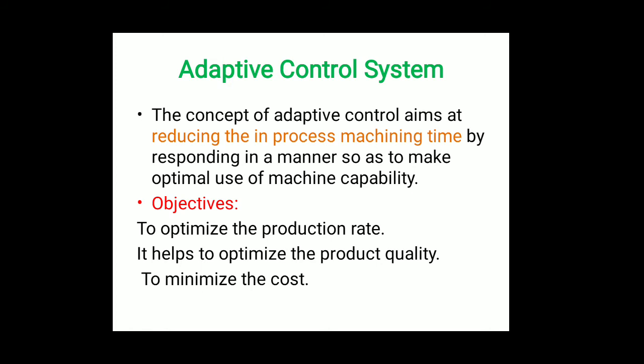Next is the adaptive control system. The concept of adaptive control aims to reduce in-process machining time by responding in a manner so as to make optimal use of the machine capability. Adaptive control aims at real-time control of operating parameters such as cutting speed, feeds, and depth of cut, which adjust automatically so as to use the maximum available spindle power, limit the deflection of the cutter to its permissible value, limit the cutting tool temperature to its permissible value, and limit the vibration amplitude of the cutter to its permissible value.